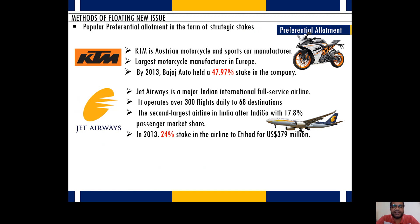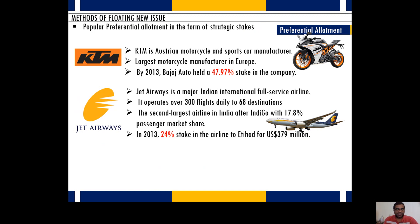This is also a kind of preferential allotment where one company acquires a huge amount of shares in another company but does not necessarily become the owner. Most companies prefer maintaining that 51% limit because if you don't have 51%, you lose ownership in your own company. Therefore, companies ensure that shares sold in private placement should not exceed 51%.